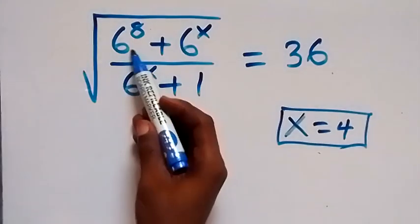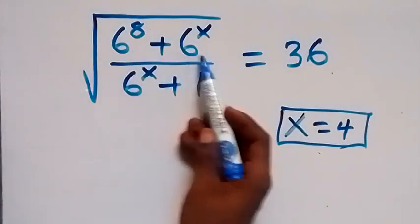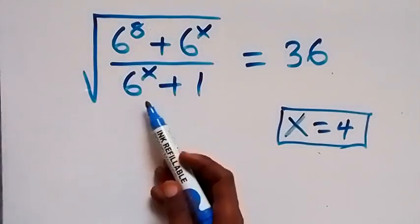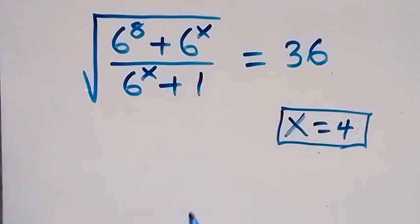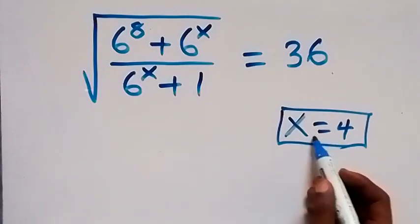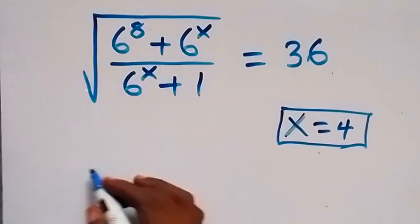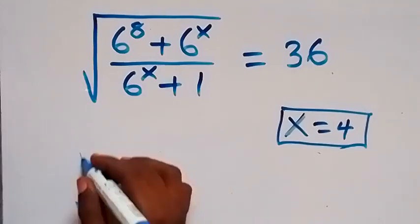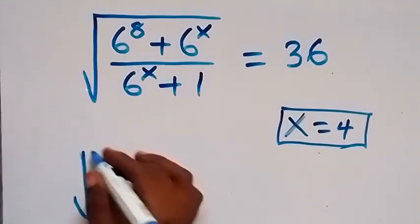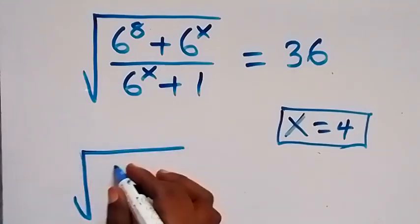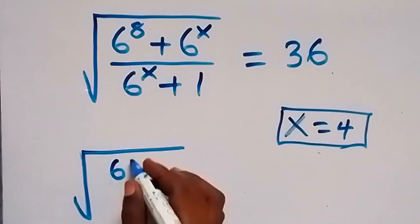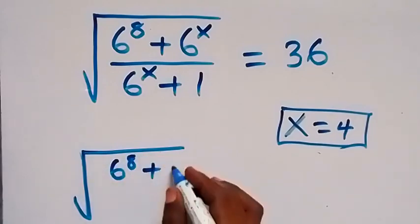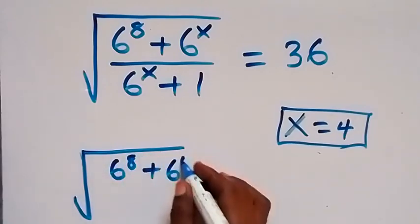We substitute x equals 4, and we have the square root of 6 raised to power 8 plus 6 raised to power 4, over 6 raised to power 4 plus 1.